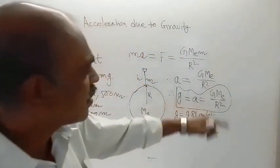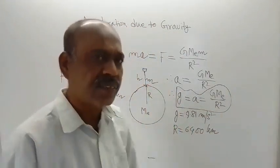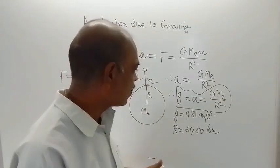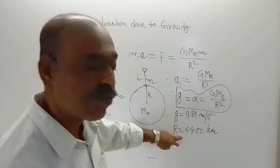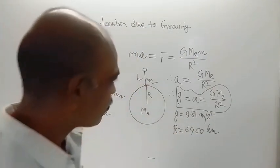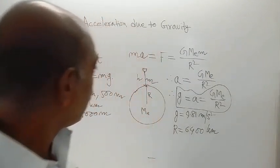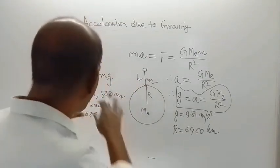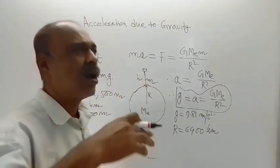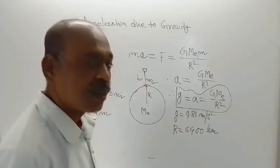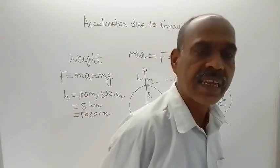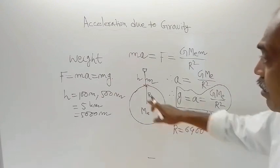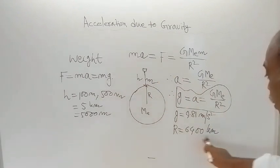We draw this conclusion just by comparing the radius of 6400 kilometers with the small heights. Now suppose the height h is not so small — say h equals 200 kilometers, 500 kilometers, 10,000 kilometers, or 20,000 kilometers. In those cases, the value of h is not very small compared to the radius of the Earth.